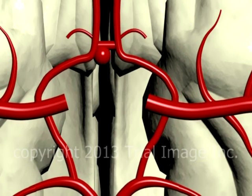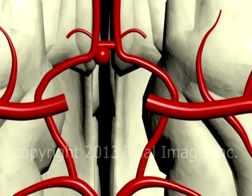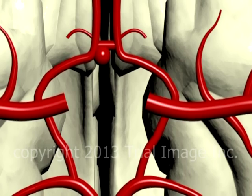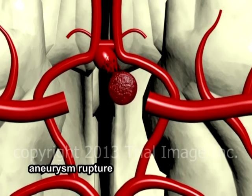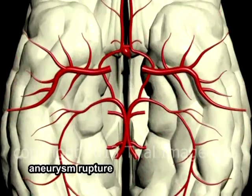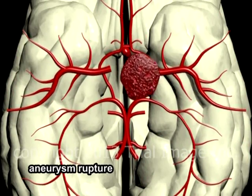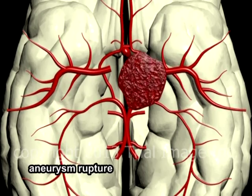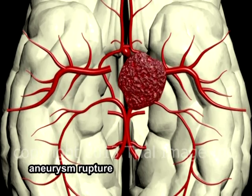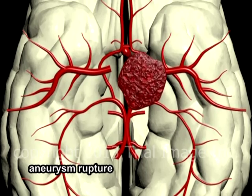The strength of the aneurysm wall is inversely proportional to its size. Lesions one centimeter or larger are particularly susceptible to sudden increase in growth and rupture. With rupture, blood spreads rapidly across the surface of the brain via the cerebral spinal fluid. Bleeding generally only lasts a few seconds; however, re-bleeding may occur and is most likely within 24 hours of rupture and initial hemorrhage.